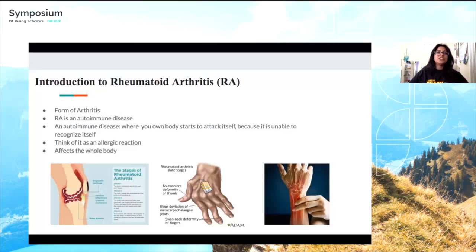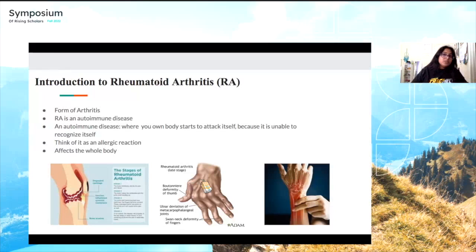A little background before we start: the reason I picked rheumatoid arthritis is because my grandmother suffered from this disease. She passed away this August, so I dedicated this presentation to her. Rheumatoid arthritis is a form of arthritis — abbreviated as RA — and it is an autoimmune disease within the group of arthritis conditions.